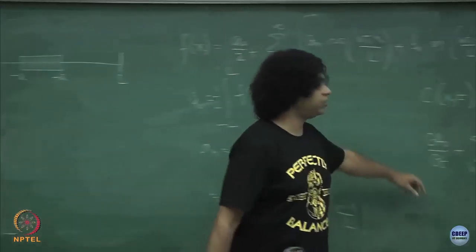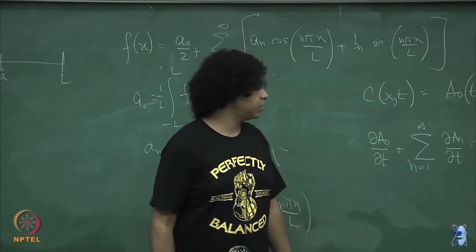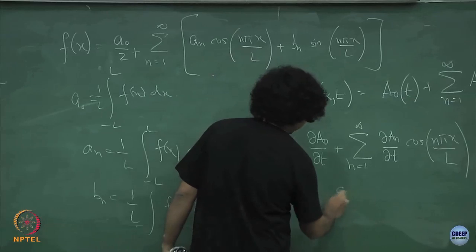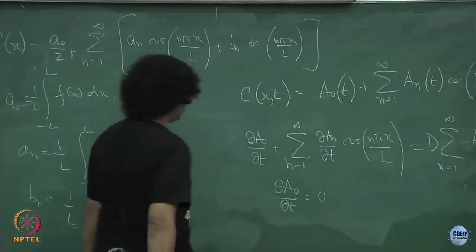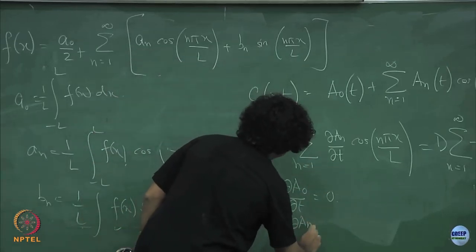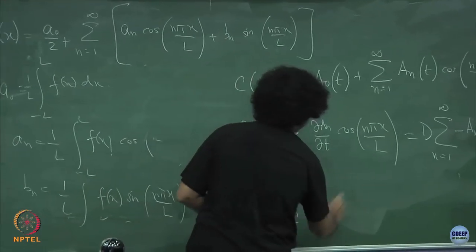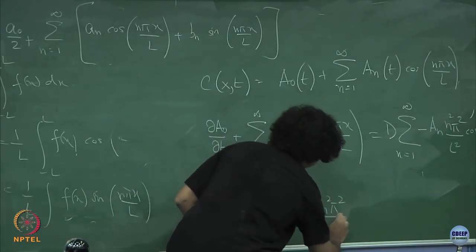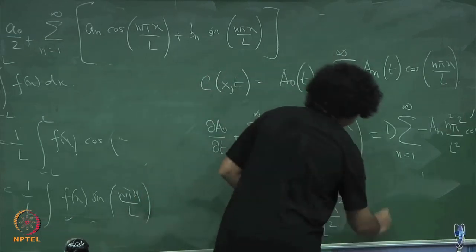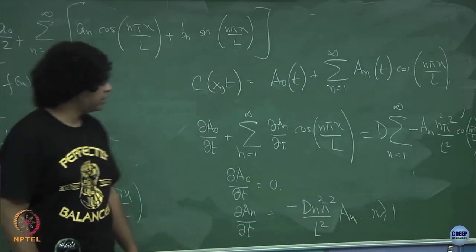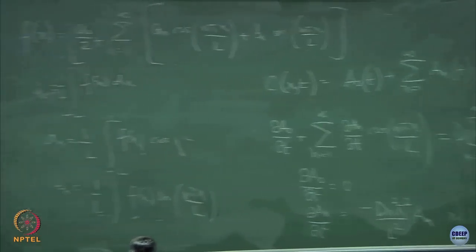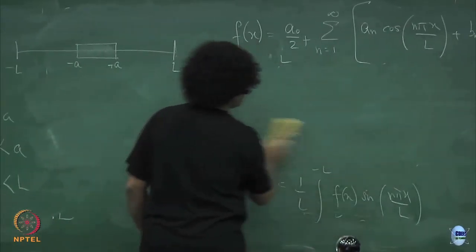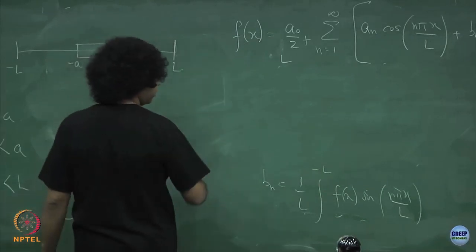Using orthogonality I can convert this into a set of independent equations. So del a naught / del t equals 0, and del a_n / del t equals minus D n² pi² / l² times a_n, for all n greater than or equal to 1.